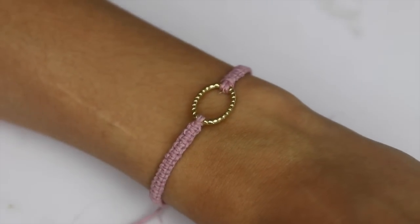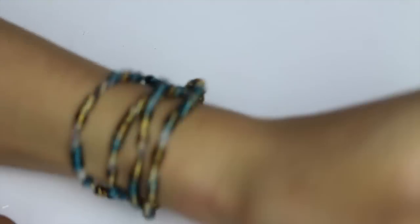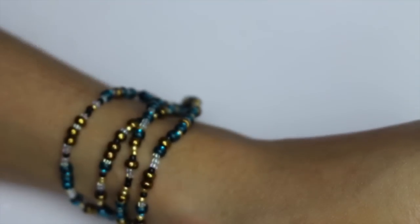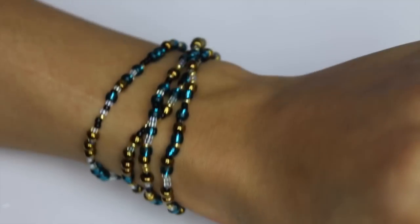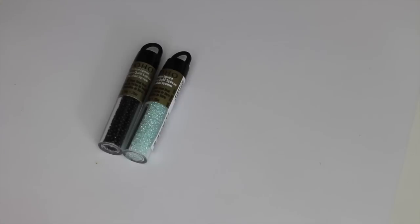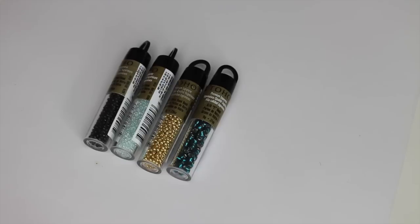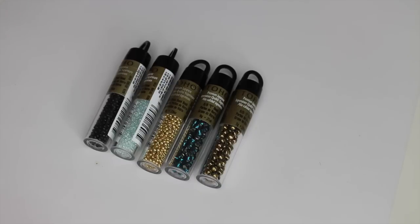For this next bracelet that can also be a choker or an anklet or a necklace, or really whatever you want, all you're going to need is lots of different colored beads. I just got these from Michaels and you can really choose whatever colors you want, and then you're also going to need some kind of stretchy string.